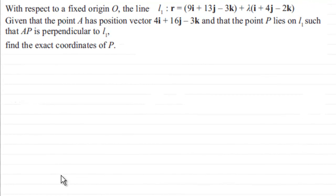Hi. Now what we have is a straight line given by this equation. The straight line is called L1. We're given that the point A has position 4i plus 16j minus 3k and that the point P lies on L1 such that AP is perpendicular to L1. And what we've got to do is find the exact coordinates of P.